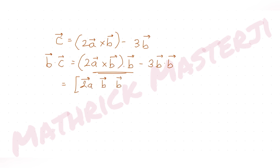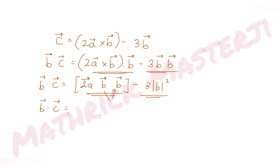The other term becomes −3(b · b), which is −3|b|². In a scalar triple product, if two vectors are the same, it equals zero. So the whole expression becomes 0 − 3|b|², giving us b · c = −3|b|². Applying the dot product formula: |b||c|cosα = −3|b|².